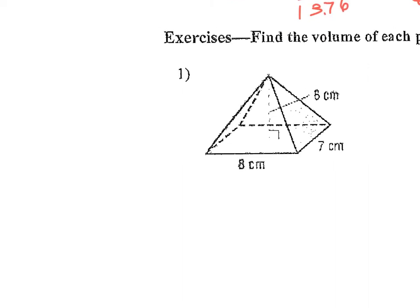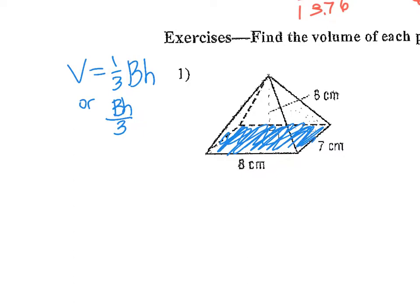Number one — first thing, write down the formula. Since it's a pyramid: volume equals one-third times the area of the base times the height, or area of the base times height divided by three. Second, figure out what the base is. It's a square — or rectangle, since these numbers aren't the exact same. So the area of the base: length times width, which is 8 times 7, giving 56.